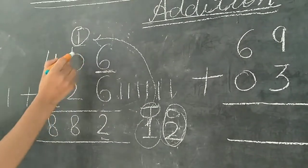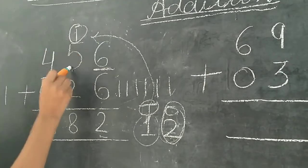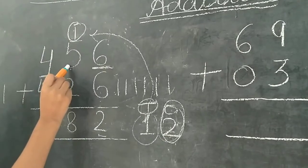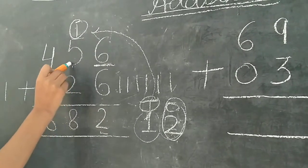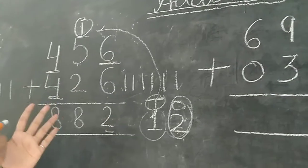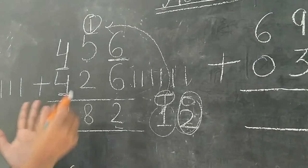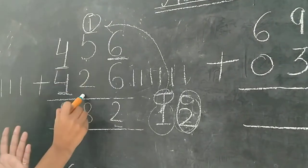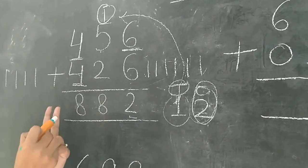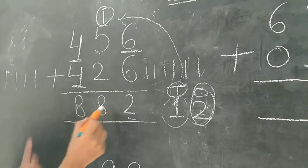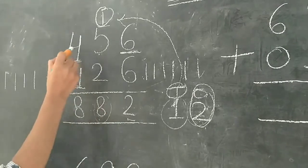Now we have to count. Ab hum 1 mein 5 add karenge. 1 ke baad aap 5 count kijiye: 1, 2, 3, 4, 5, 6. 6 ke baad aur count kiya: 6, 7, 8. Toh humne yaan pe kya likha? 8.